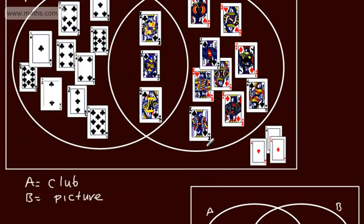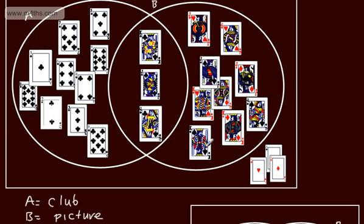The question I'm going to ask is: given that the card we've chosen is a picture card, what is the probability that it will be a club? If it's a picture card, we can only choose from B, and the clubs we've got are in the intersection. So we're going to have a probability of 3 over 12, which we could simplify to 1 over 4.